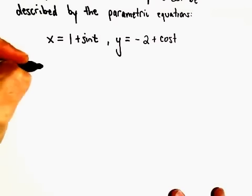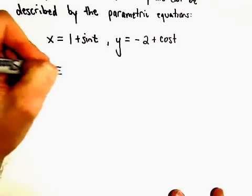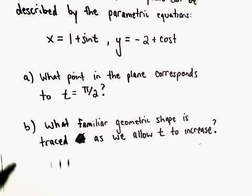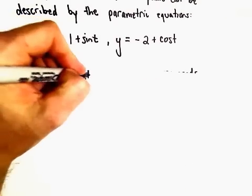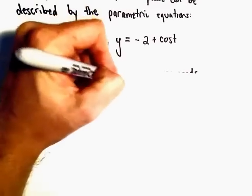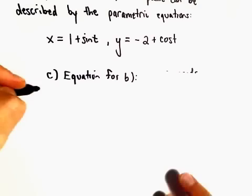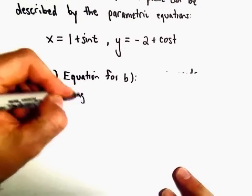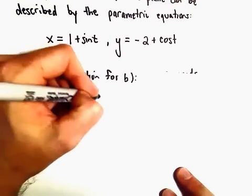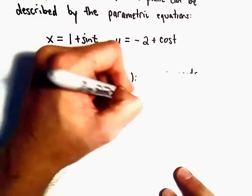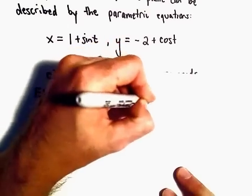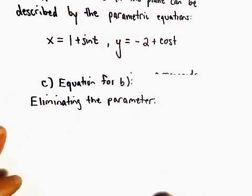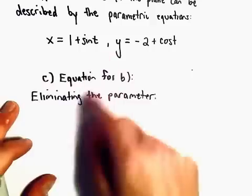The way we're going to find the equation, so the equation for part B, is we're going to do what's called eliminating the parameter. So what I'm going to try to do is simply produce an equation that relates x and y together.